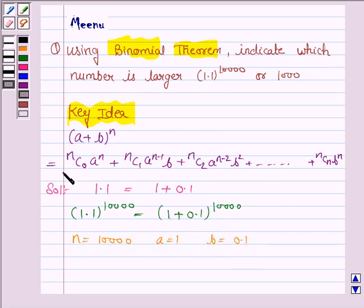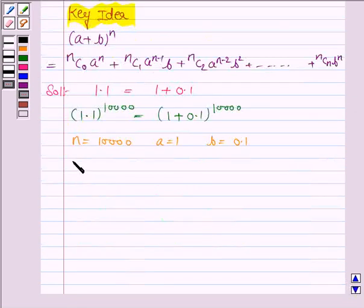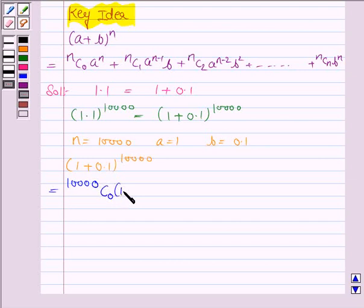Now we expand this using the expansion of (a + b) to the power n. So (1 + 0.1) to the power 10,000 is equal to 10,000C0 times 1 to the power 10,000 plus 10,000C1 times 1 to the power 9,999 times 0.1.